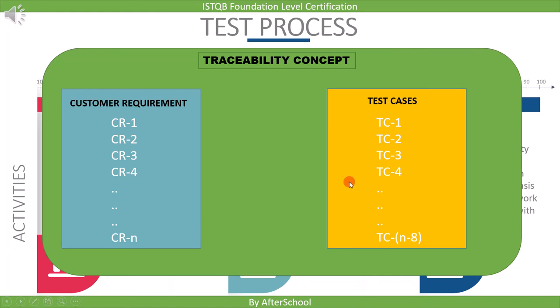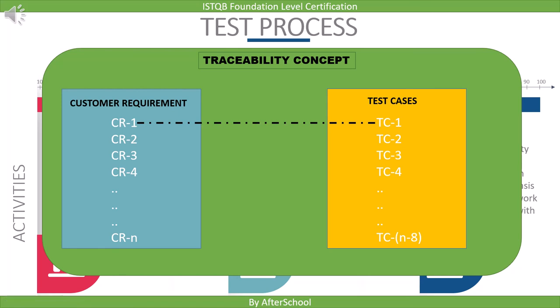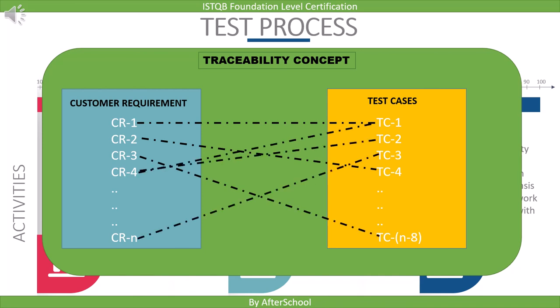Let's see how we do that. As soon as we write the test case for a requirement, we link them using a tool. For example, requirement 1 is linked to test case 1. Since we have bi-directional traceability, at any time we can see which test case is connected to requirement 1, or which requirement is connected to test case 1. Similarly, we can provide traceability for other test cases, so that each requirement has associated test cases.